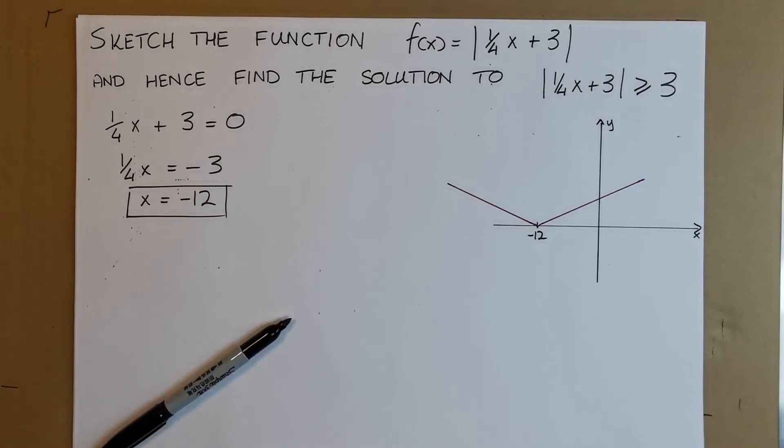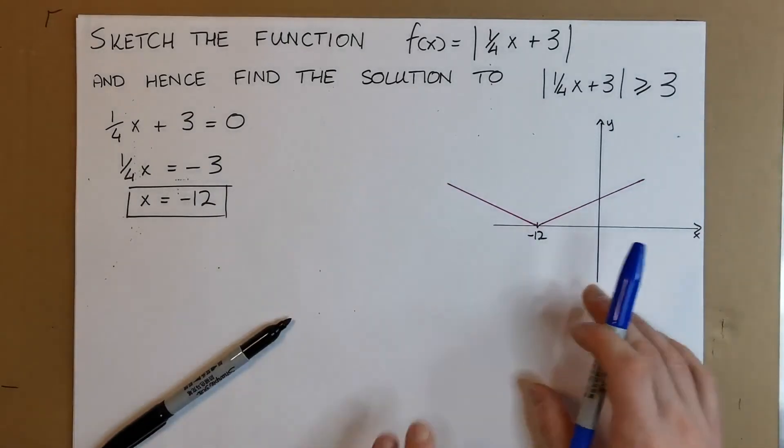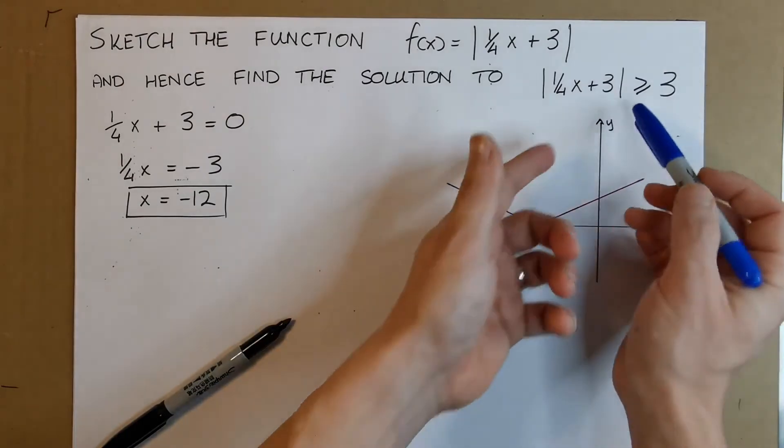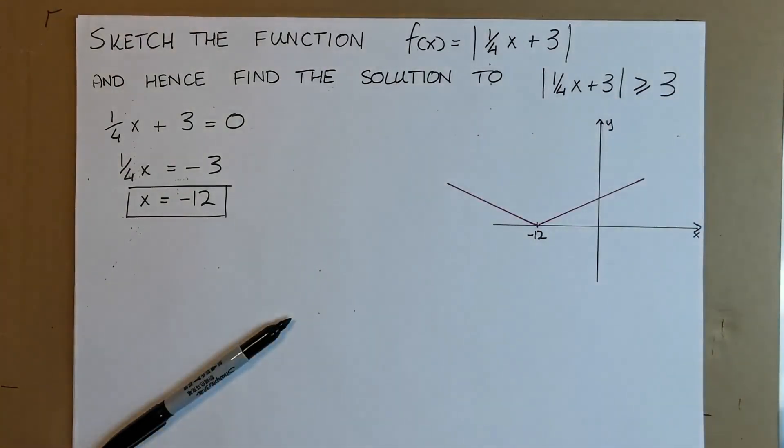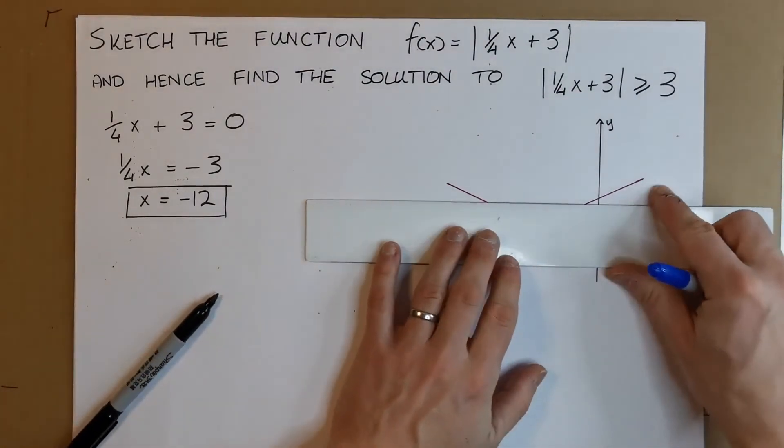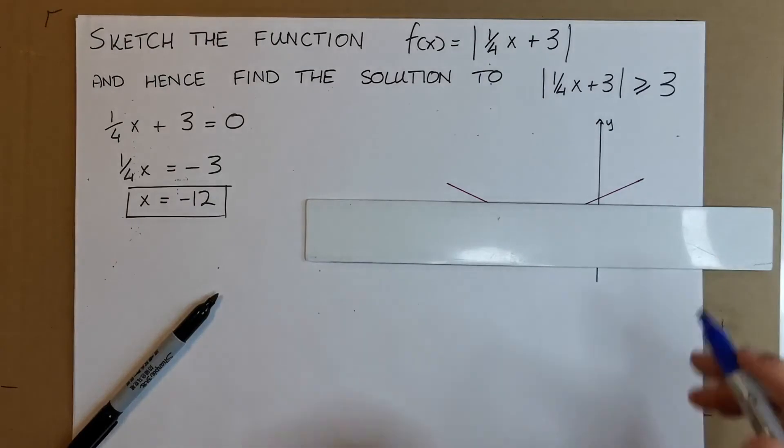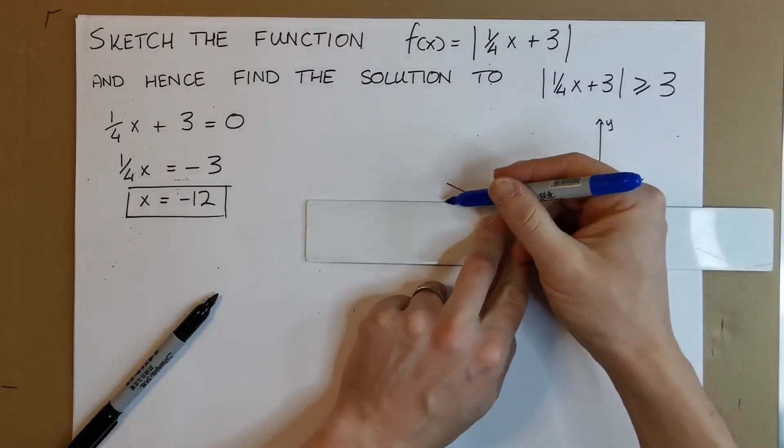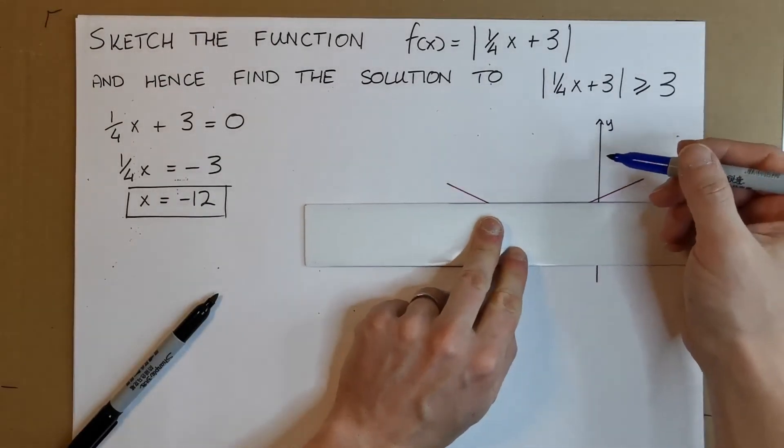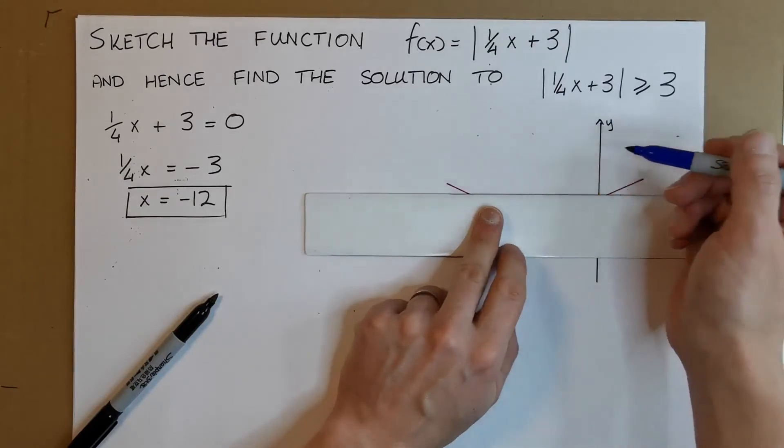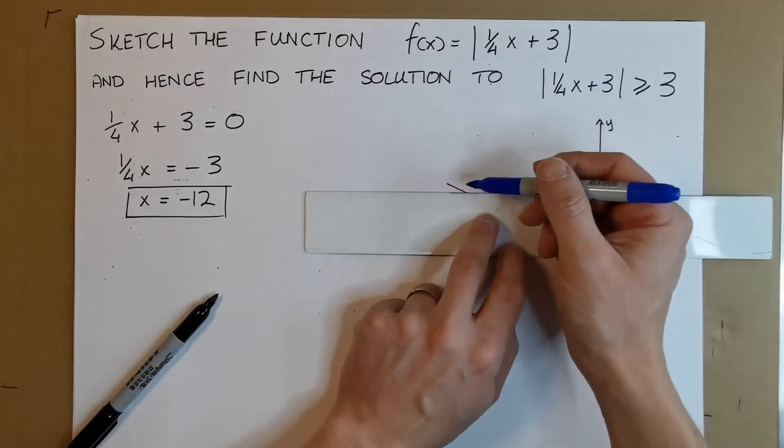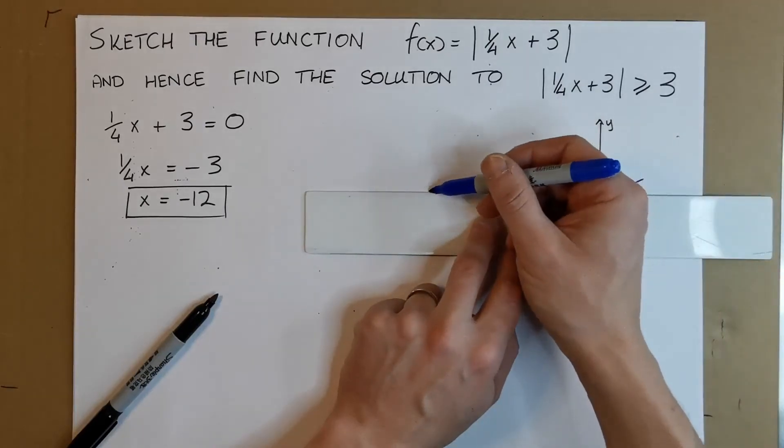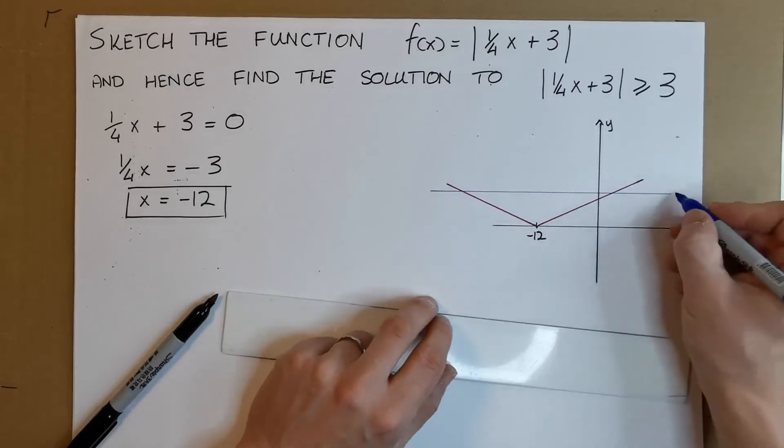Next, we need to use this graph to find the range of values where |1/4x + 3| is greater than or equal to 3. I'm going to draw in the y = 3 line here. Let's say this is the line y = 3. If we're looking for values greater than or equal to 3, there will be some point here on the x-axis, all these values going this way and all these values going this way, when the function is above or equal to y = 3.